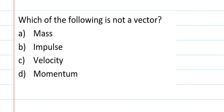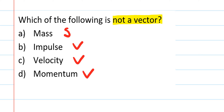The next question asks: which of the following is not a vector? Going down the list: mass is a scalar (magnitude only), impulse is a vector, velocity is a vector, and momentum is also a vector. So the correct answer is option A — mass is not a vector.